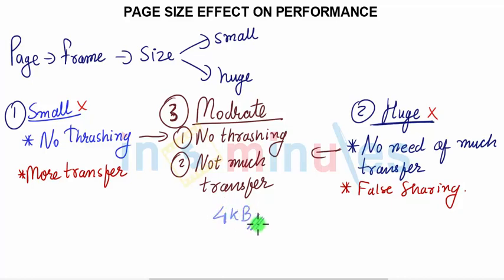So what would be the effect of performance with reference to page size? Smaller means more transfer, so it will become slower. Bigger can lead to false sharing.